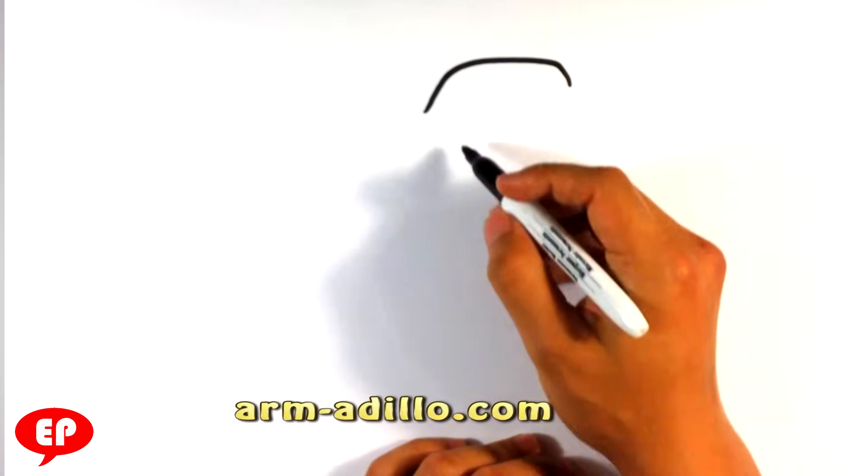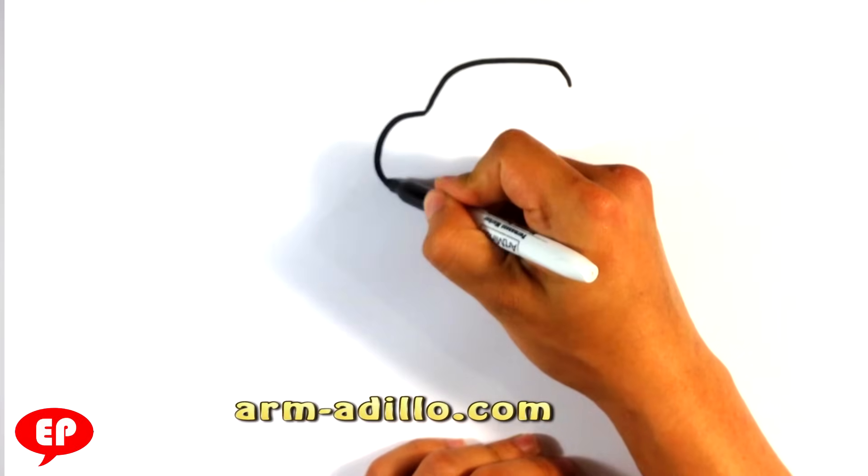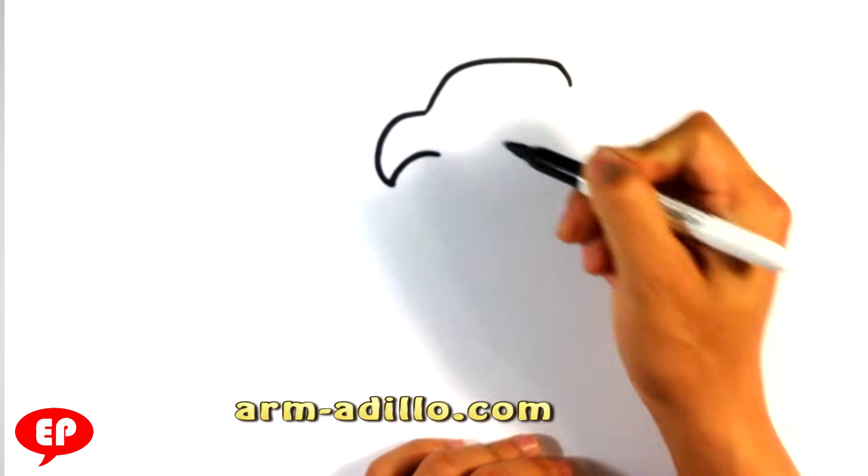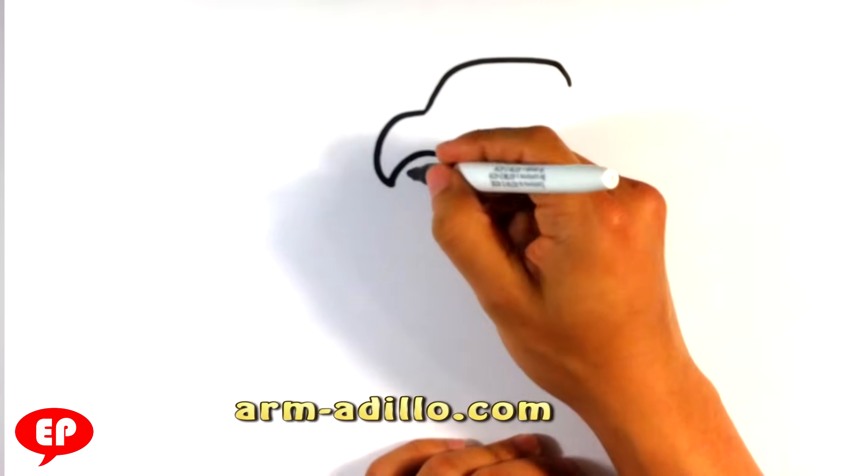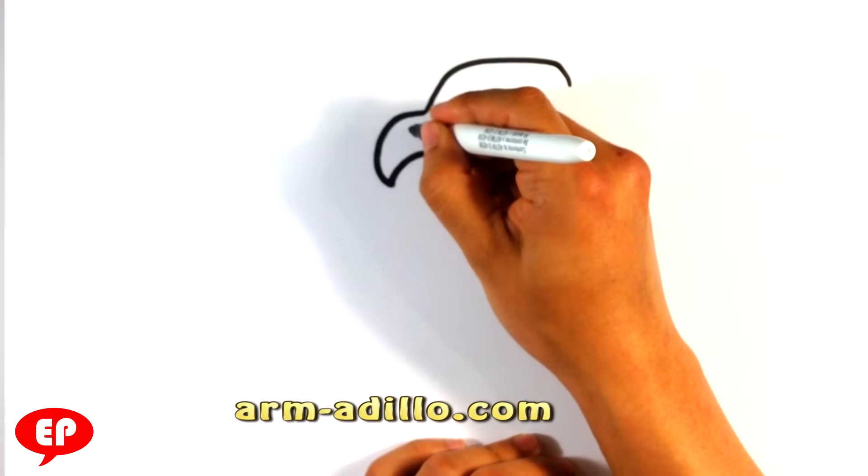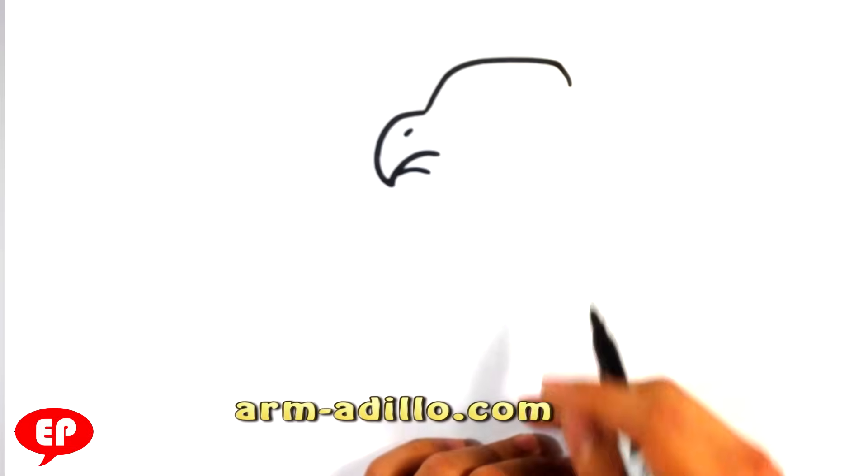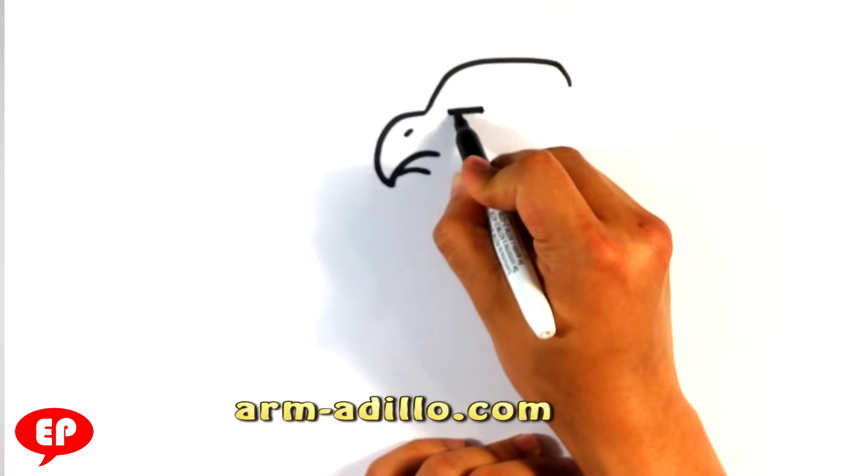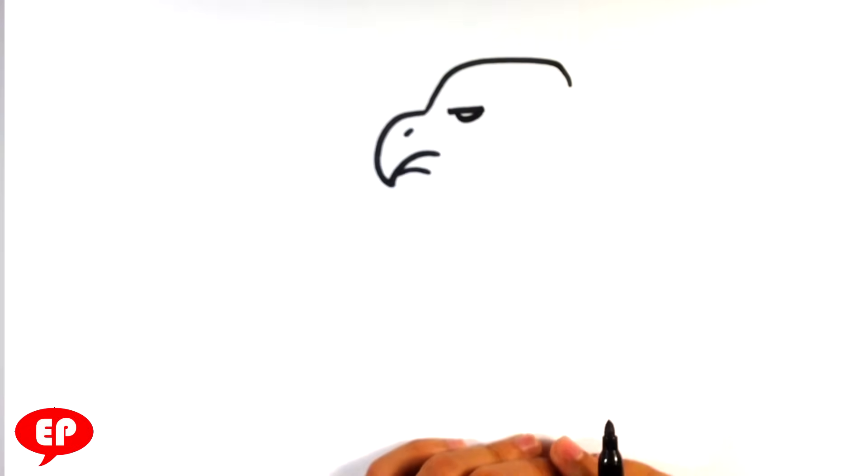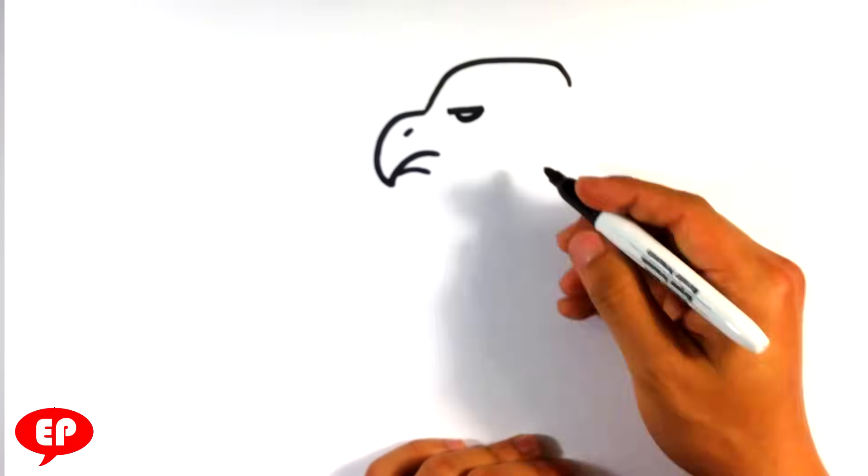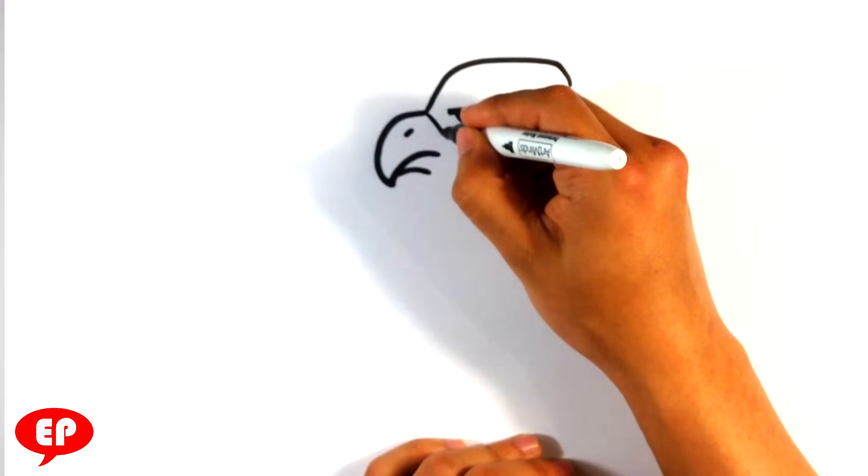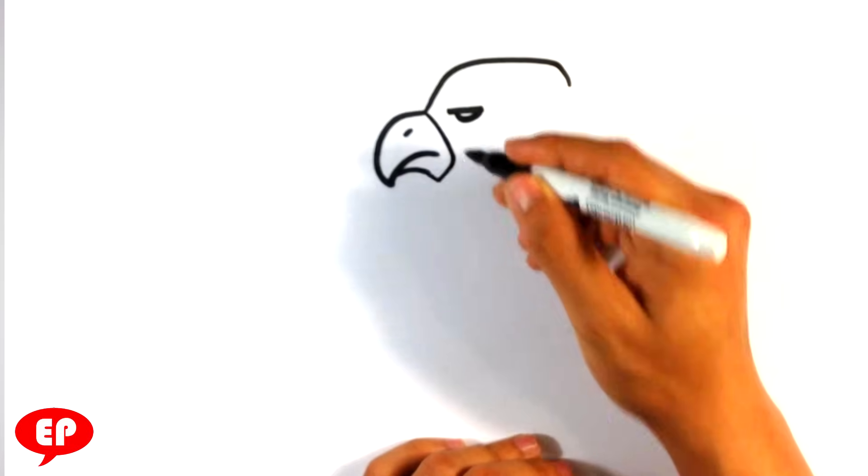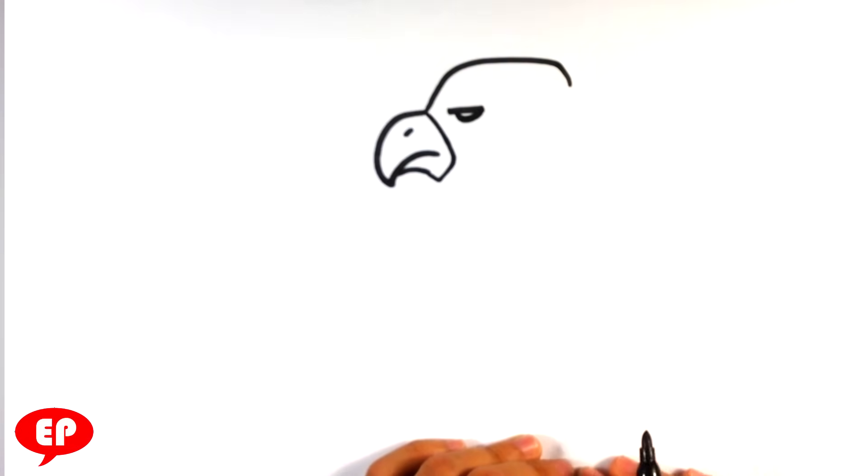Top of the head, we're drawing a cute eagle here. Top of the beak, lower beak, nostril. It has a mean look sometimes, so I'm going to give it a mean look. A line separating his beak from his head.